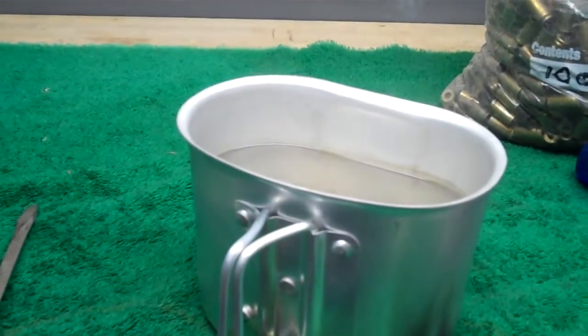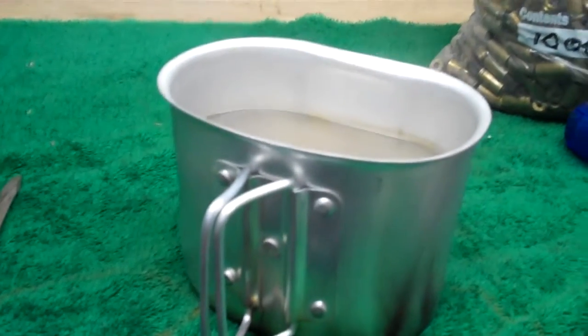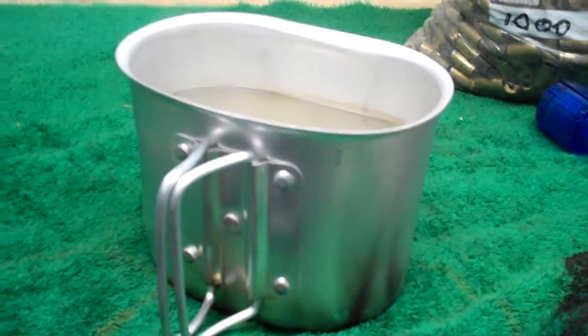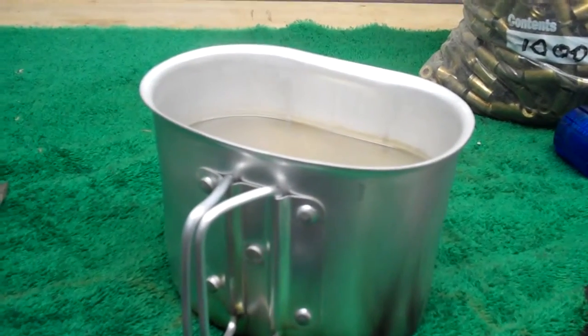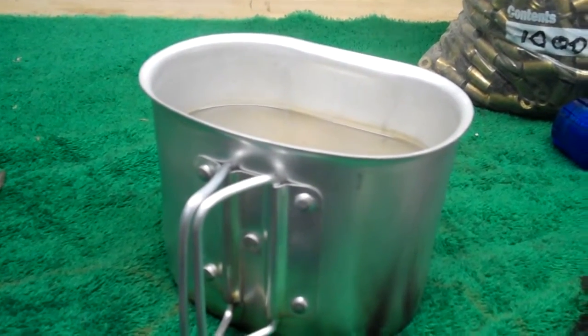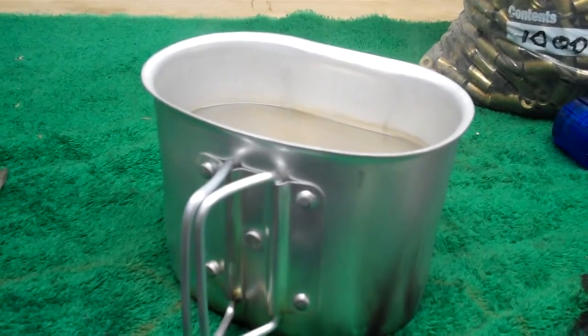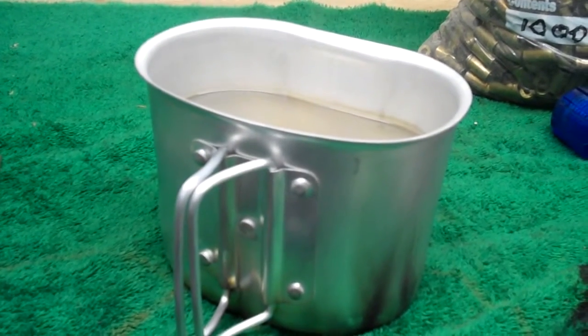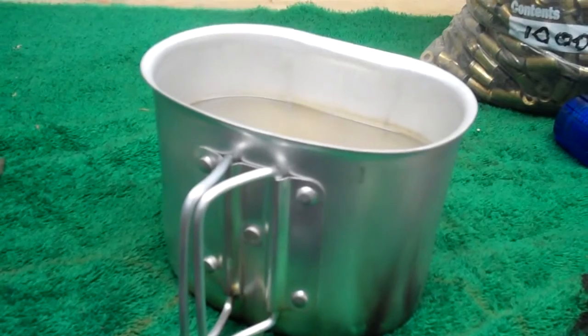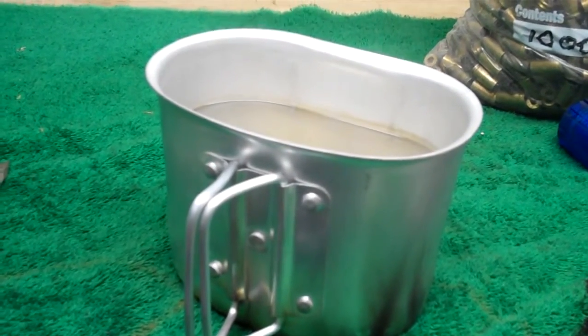Basically what you're gonna be doing is taking your canteen cup, or sometimes there's a little bit bigger one that they sell in camping stores, and you're gonna be boiling water to either put that Mountain House dehydrated food in there, or hot chocolate, or coffee, or just sterilizing the water so you can drink it.